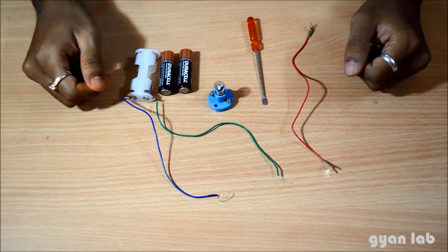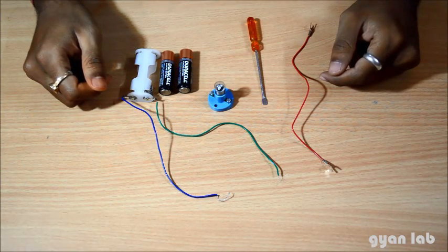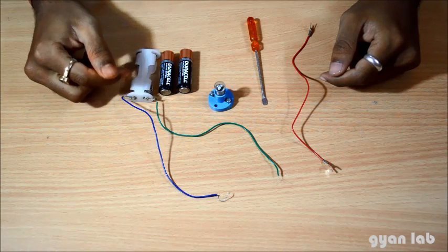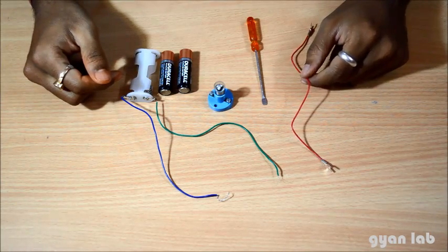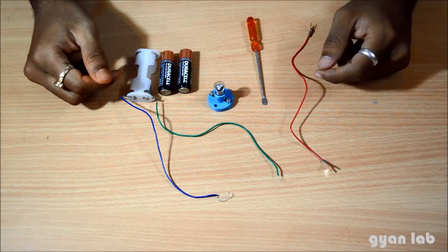What we need today for our activity is a simple bulb with a bulb holder, a battery holder, two batteries, along with one piece of connecting wire and a screwdriver.